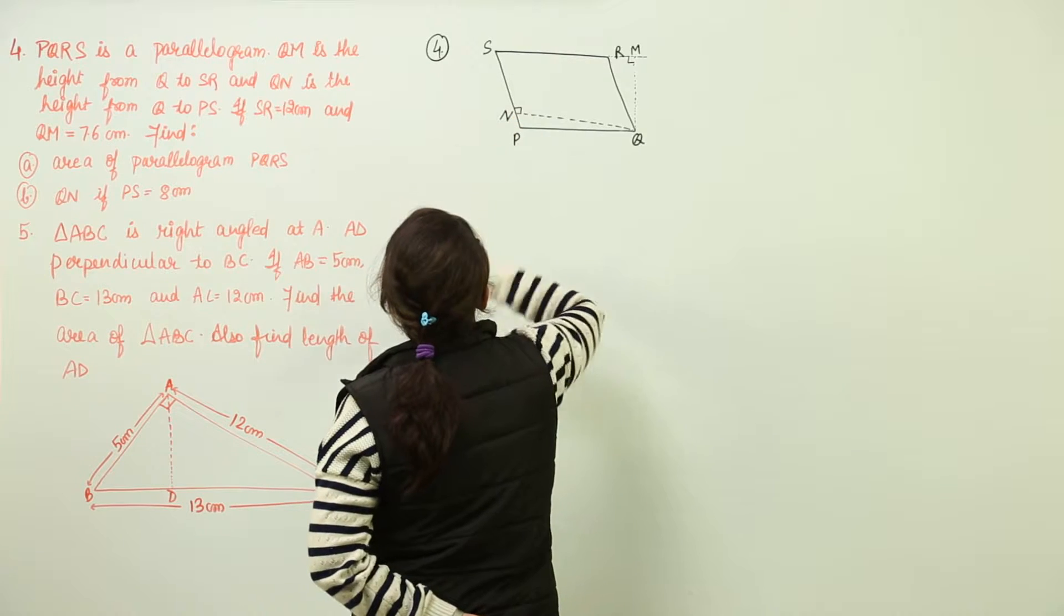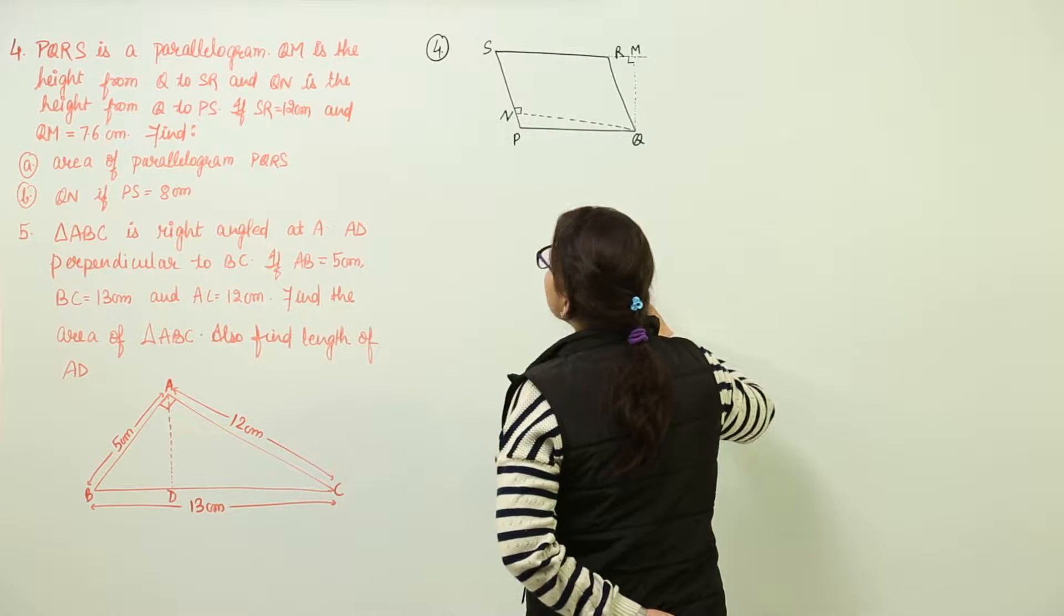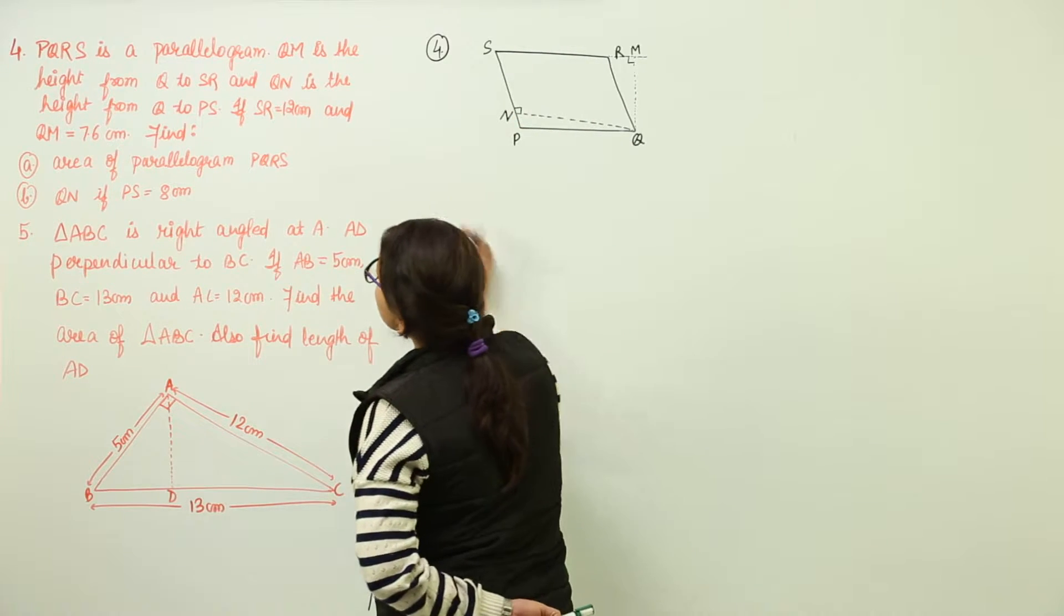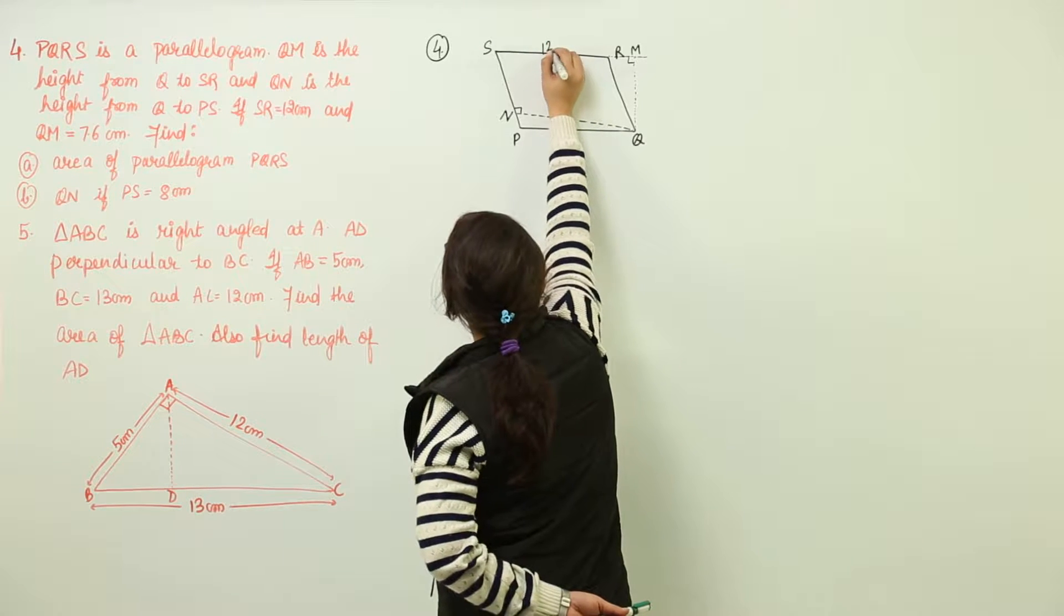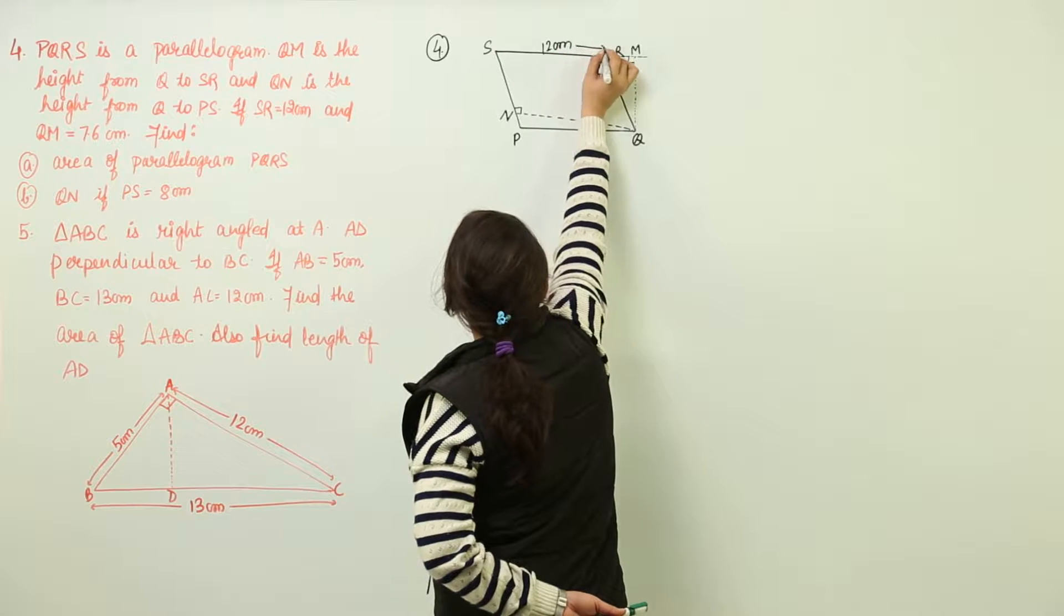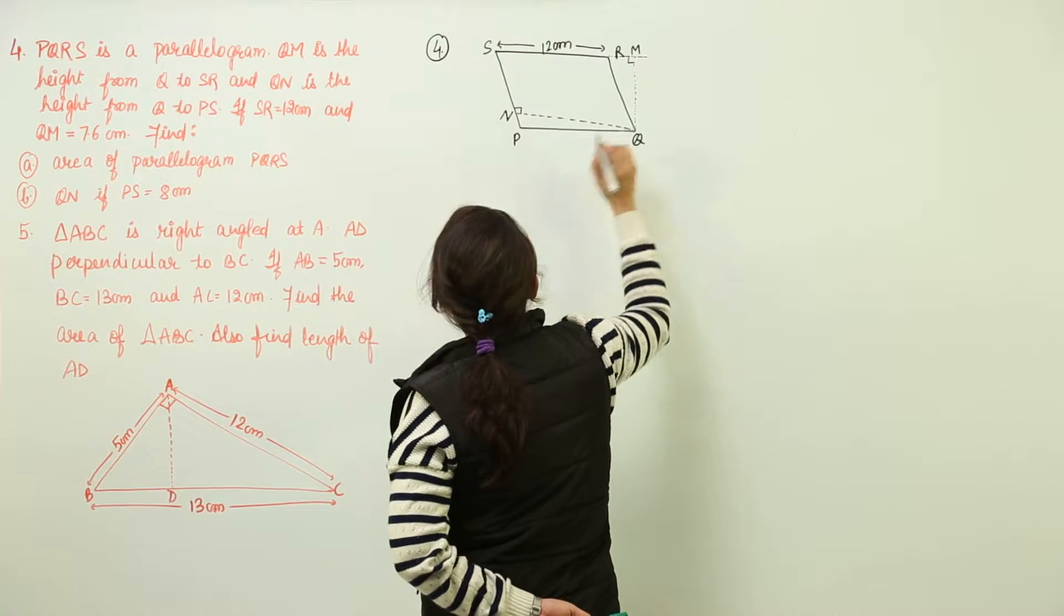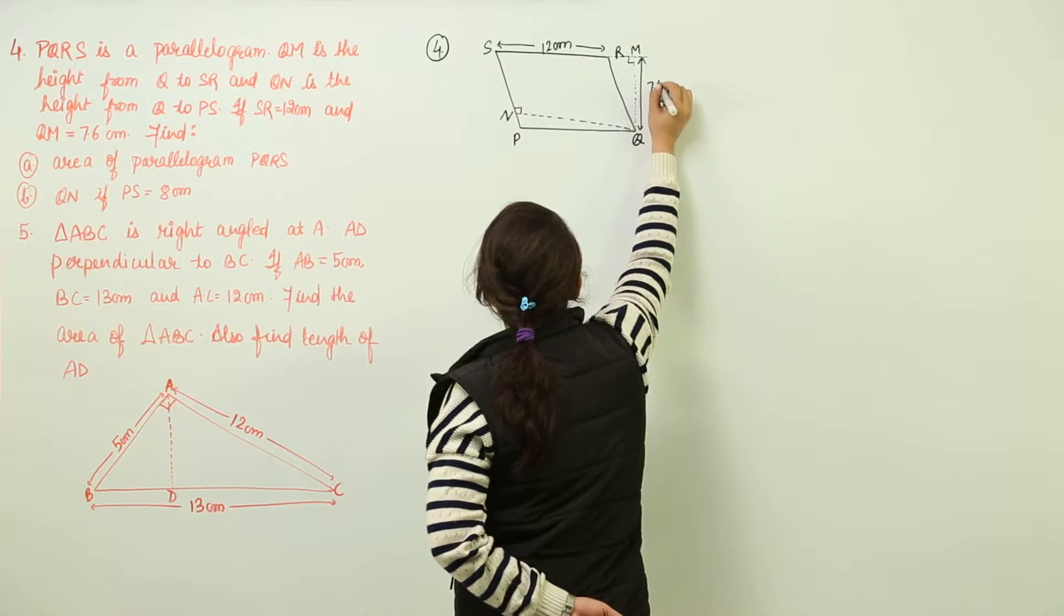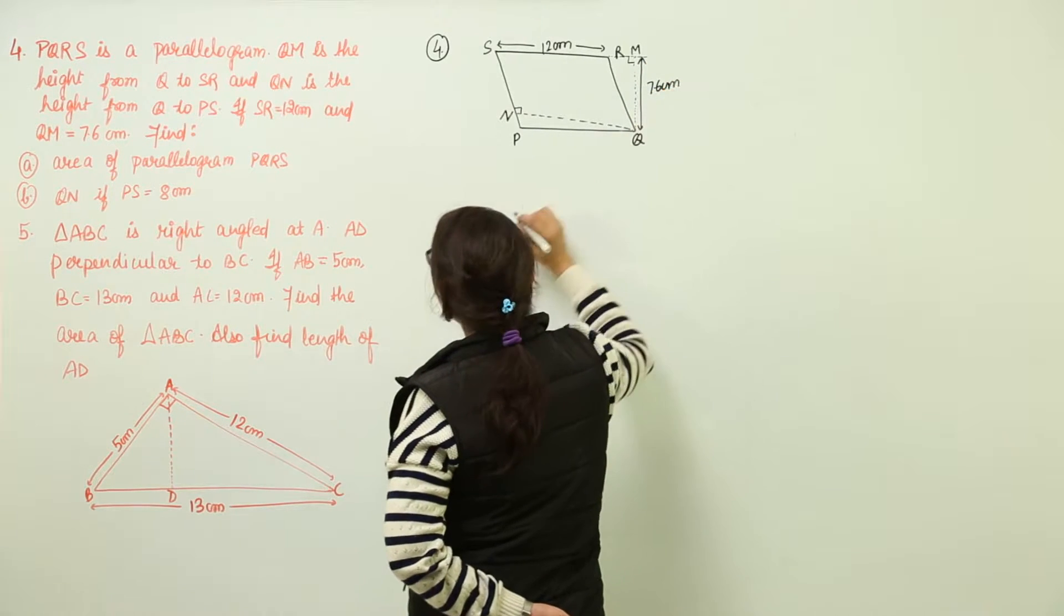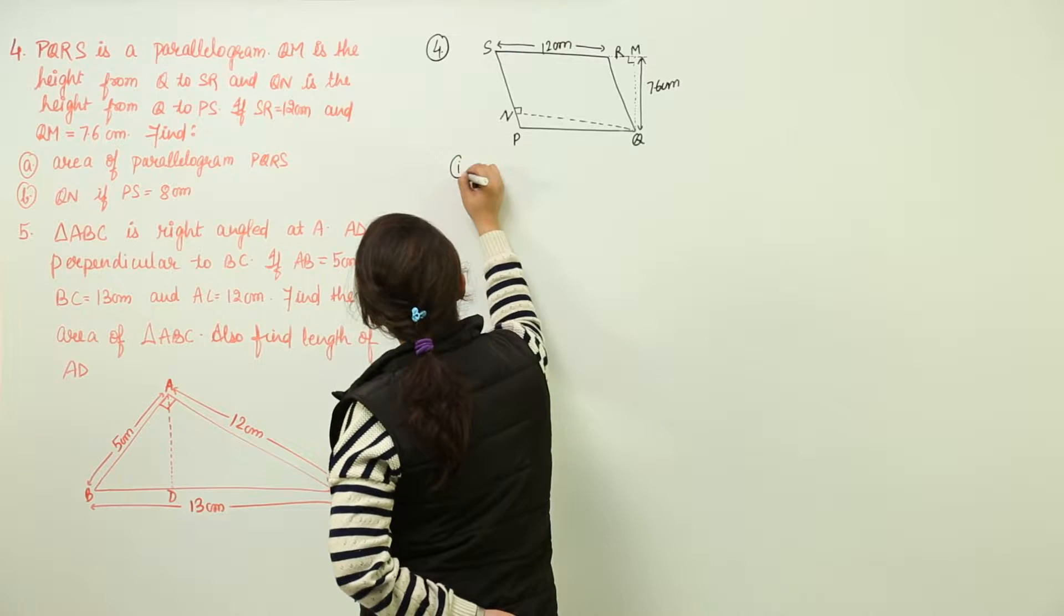and that was point M. Now we have been given the measurements of SR which is 12. SR is given as 12 centimeters. QM is given as 7.6 centimeters. We have to find out the area in the first part.